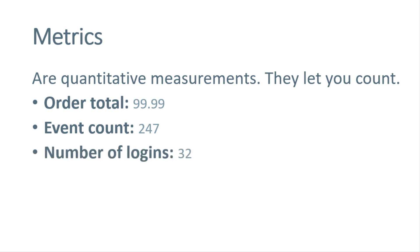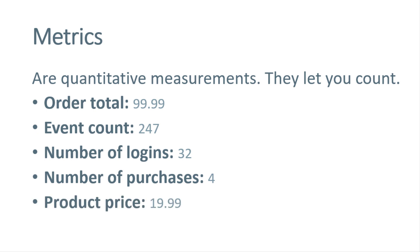Then we have number of logins — for example, how many times did a user login to your website — then how many times did a certain client make purchases on your site, and a product price can also be a metric. These are numbers and we can count them. For example, if one visitor made four purchases and another made five, then in total you have nine purchases — so the metric is number of purchases, which is nine. Things like order IDs or coupon codes are dimensions.